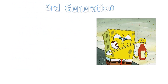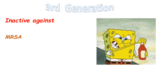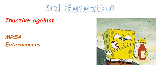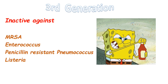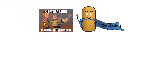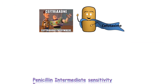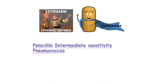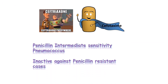Third generation Cephalosporins are less active against most gram-positive organisms than the first and second generation. They are inactive against Enterococcus, Listeria, methicillin-resistant Staphylococcus, and Acinetobacter. Both Cefotaxime and Ceftriaxone are usually active against pneumococci with intermediate susceptibility to penicillin, but strains fully resistant to penicillin are resistant to third generation Cephalosporins as well.